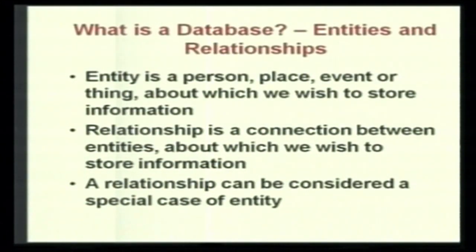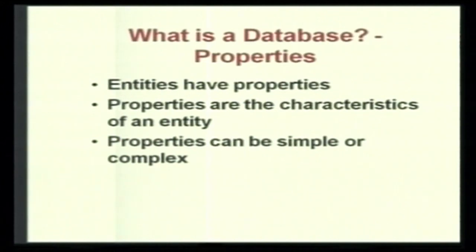What is in a database? It consists of entities and relationships. An entity can be a person, a place, an event, or a thing — anything we want to store information about. A relationship is a connection between entities about which we want to store information, and in a way a relationship can be considered a special case of an entity. Properties are characteristics of an entity — they can be simple or complex, such as a person's name, a subject's name, a part's number, dimensions, or color, depending on what the application requires.